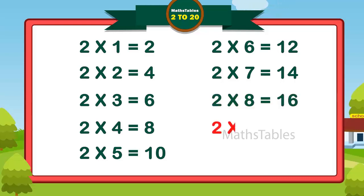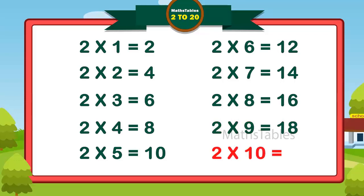Two nines are eighteen. Two nines are eighteen. Two nines are eighteen. Two tens are twenty. Two tens are twenty. Two tens are three.